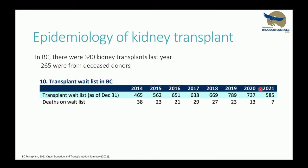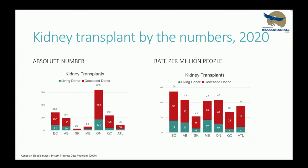Let's start with some epidemiology and terminology. In BC, there were 340 kidney transplants last year, which was record breaking, and of those 265 were from deceased donors. Our waitlist numbers are decreasing over the last couple of years, but patients are still dying on the waitlist, which means we still have scarcity of kidneys. On a national scale, Ontario does more absolute kidney transplants, but if we do a rate per million people, BC actually leads the field in Canada. The reasons include the opioid epidemic giving us a large donor pool, and BC Transplant being quite good at identifying donors and marginal kidneys.